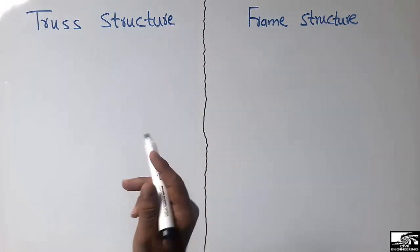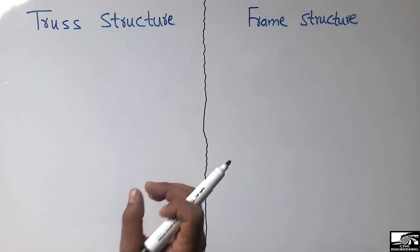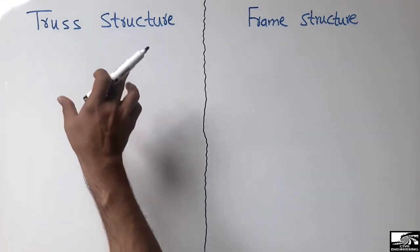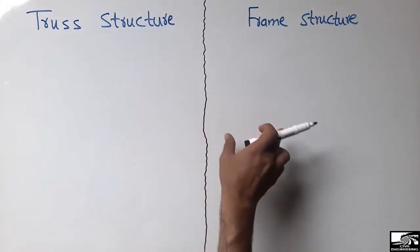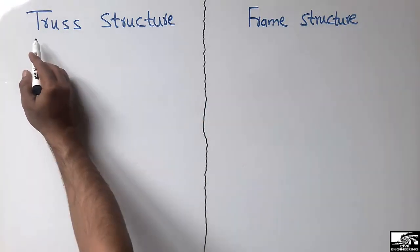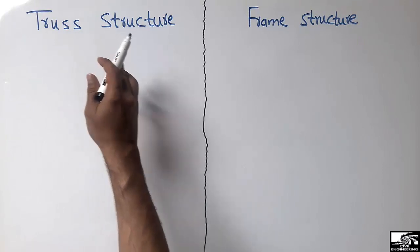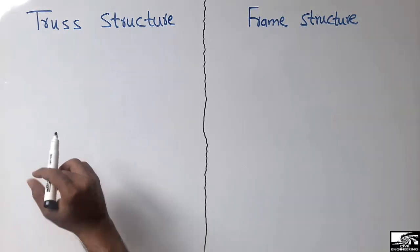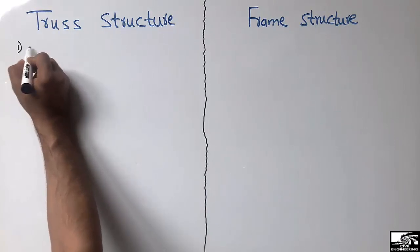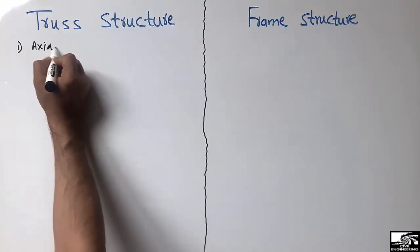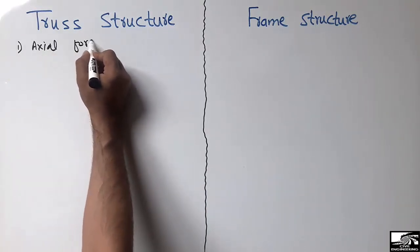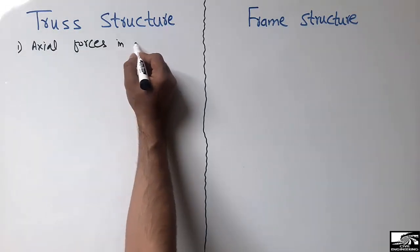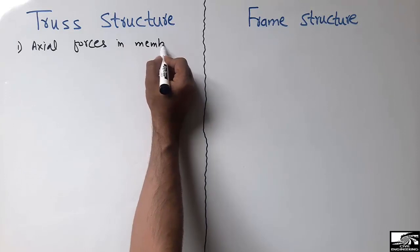There are two types of structures based on the member forces. The truss structure can be defined as the type of structure which only exerts axial forces in the members. There is no shear force or bending moment exerted in the members of the truss.